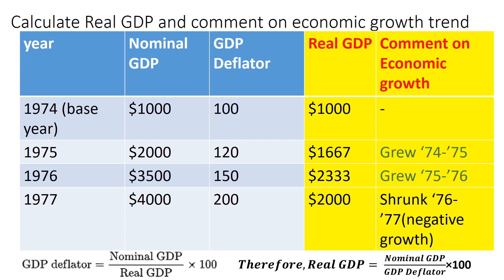The numbers in the blue shaded region are the given numbers, and the two columns in the yellow shaded area are the ones we will be calculating. The given numbers are those three columns on your left-hand side: the year from 1974 through 1977, then the nominal GDP for those four years, and their corresponding GDP deflator data.